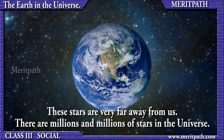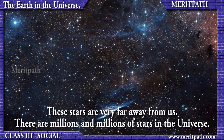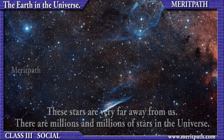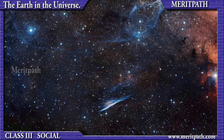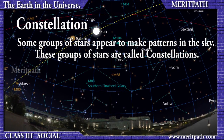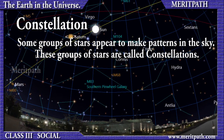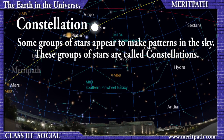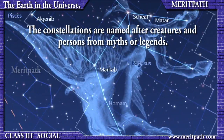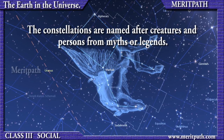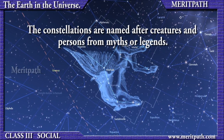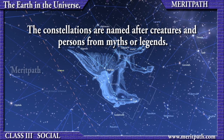The stars appear to be very small from the Earth as they are very far from us. There are millions of stars in the universe. Some groups of stars make patterns in the sky.